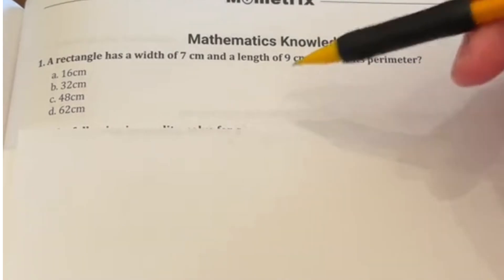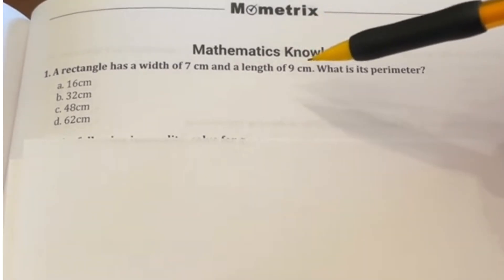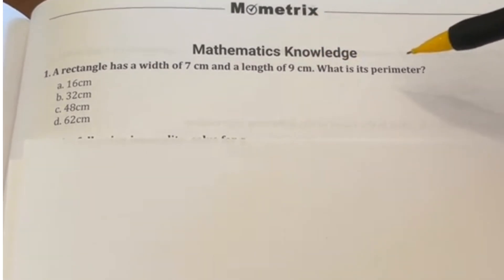So this is a Mometrics ASVAB prep book. We're looking at mathematical knowledge. It says a rectangle has a width of 7 centimeters and a length of 9 centimeters. What is the perimeter? And notice the answers are also in centimeters.